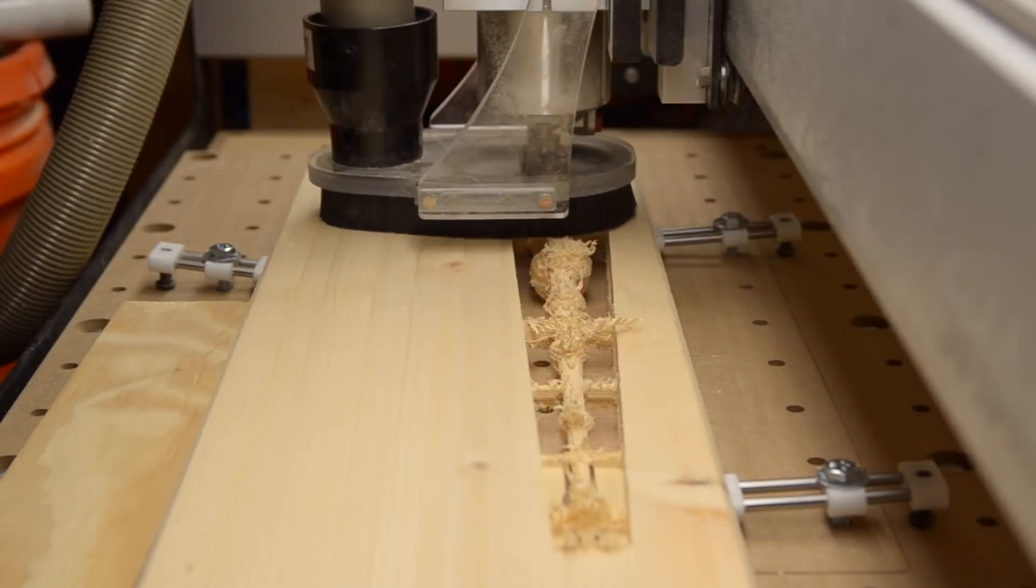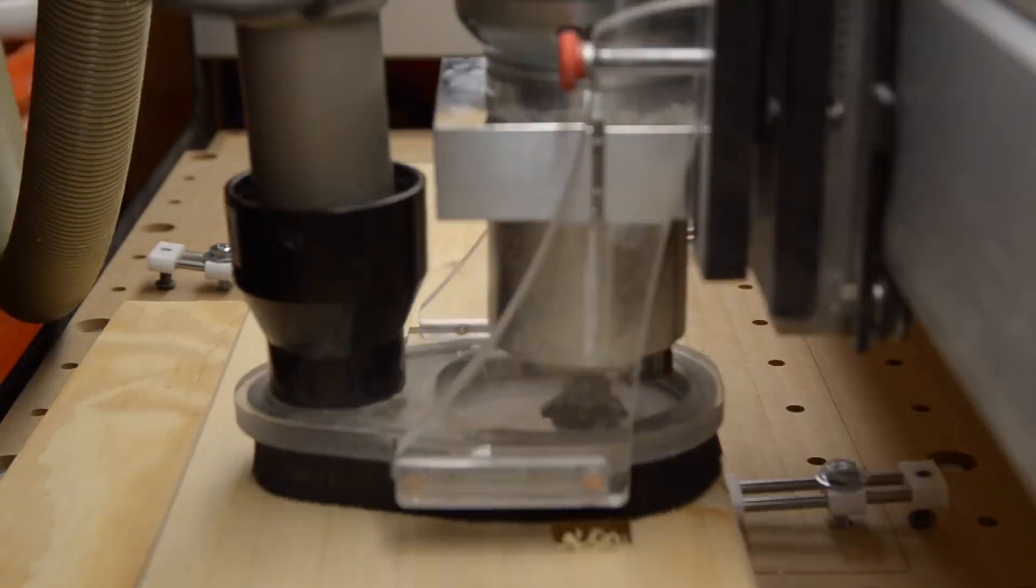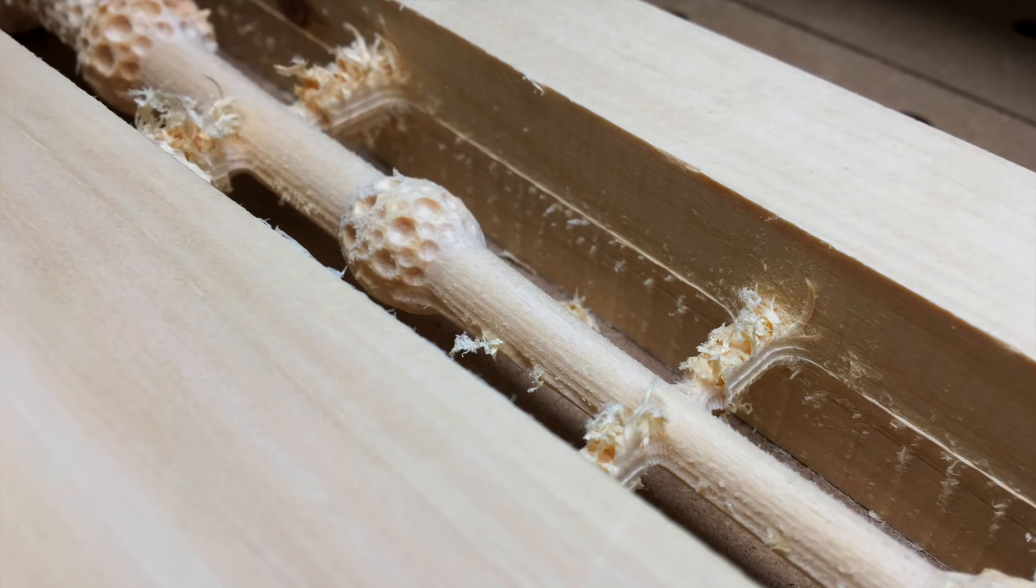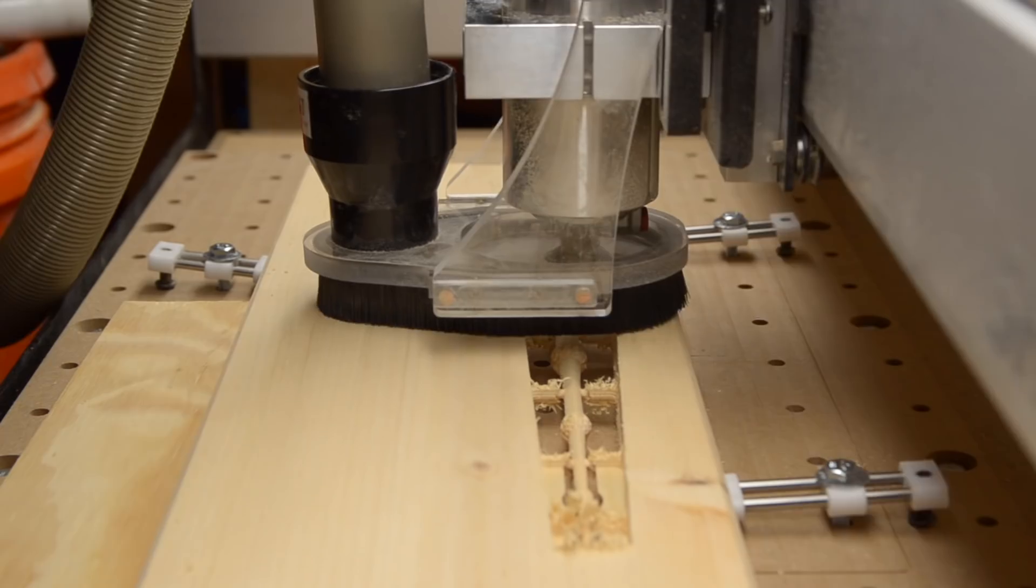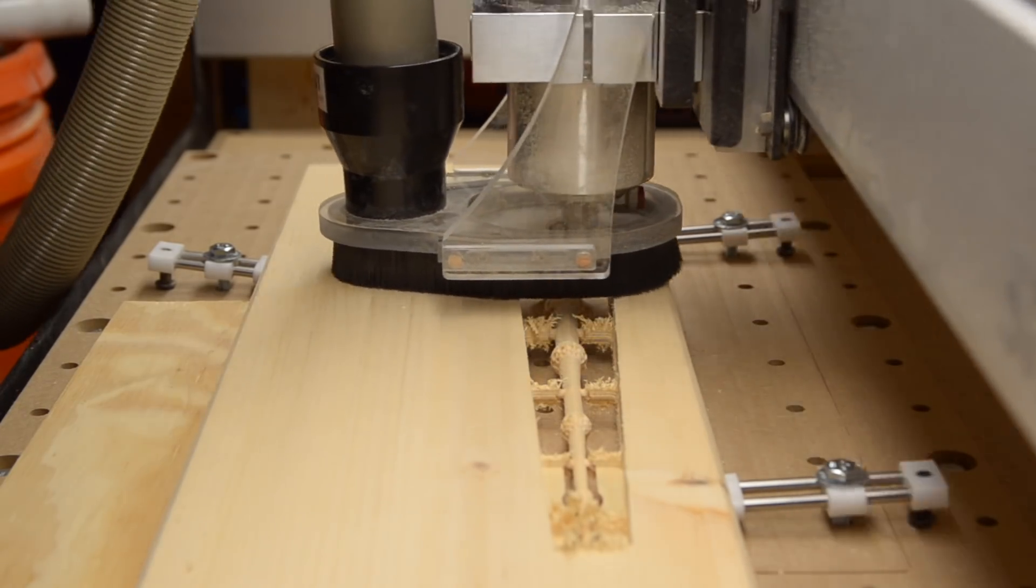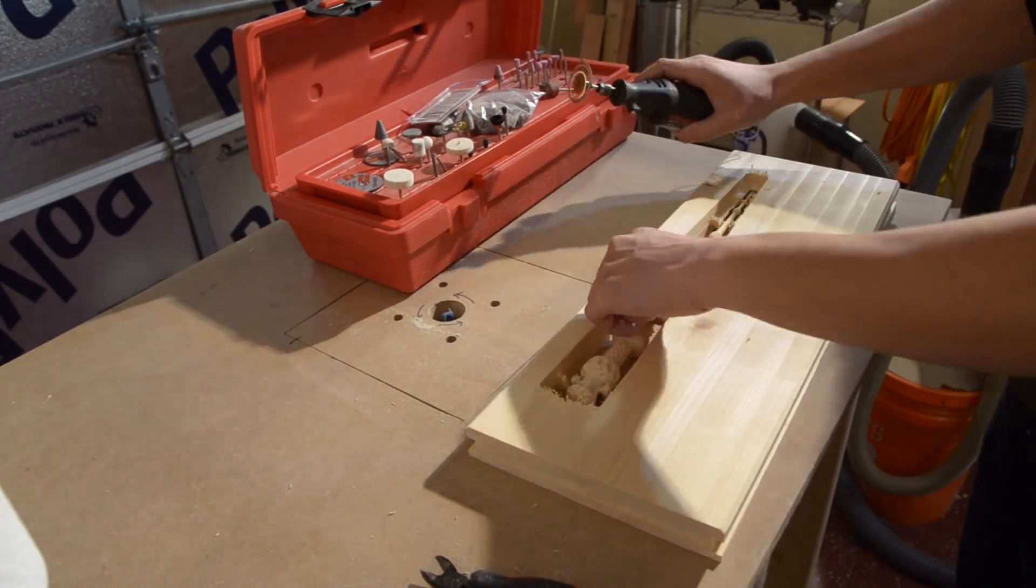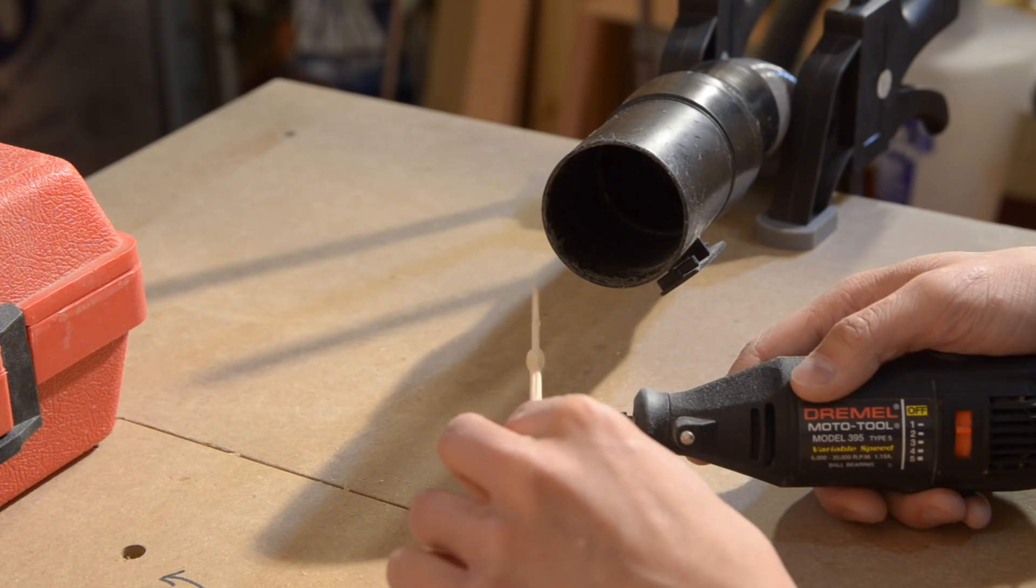Then I ran my parallel toolpath and separated my piece from its frame. You can see here some machining marks from the first pass that was oriented with my wand. This is why I came back with a perpendicular finishing pass. Using a dremel and some sandpaper, I cleaned up my piece where it had been connected to my stock.